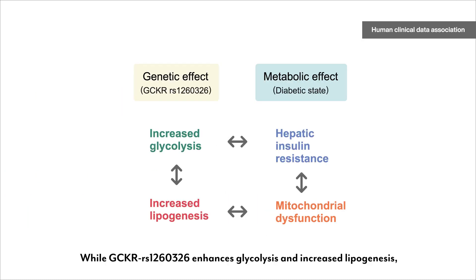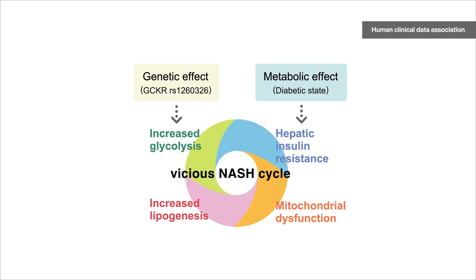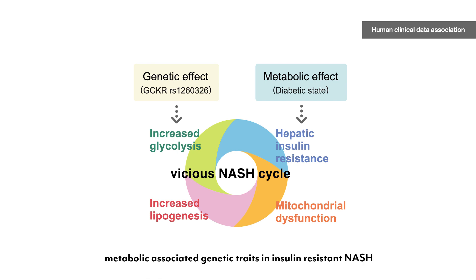While GCKR SNP enhances glycolysis and increases lipogenesis, hepatic insulin resistance exacerbates mitochondrial dysfunction. These triggers fuel a vicious NASH cycle. Our on-mass organoid phenotyping strategy identified metabolic-associated genetic traits in insulin-resistant NASH.